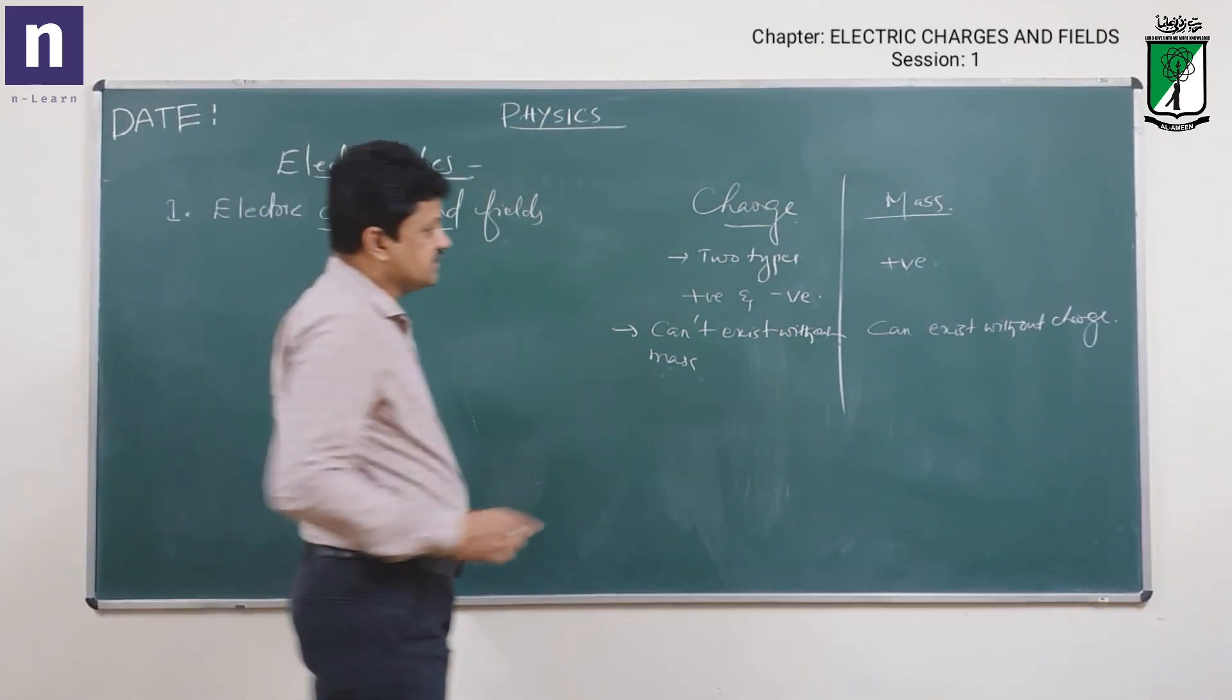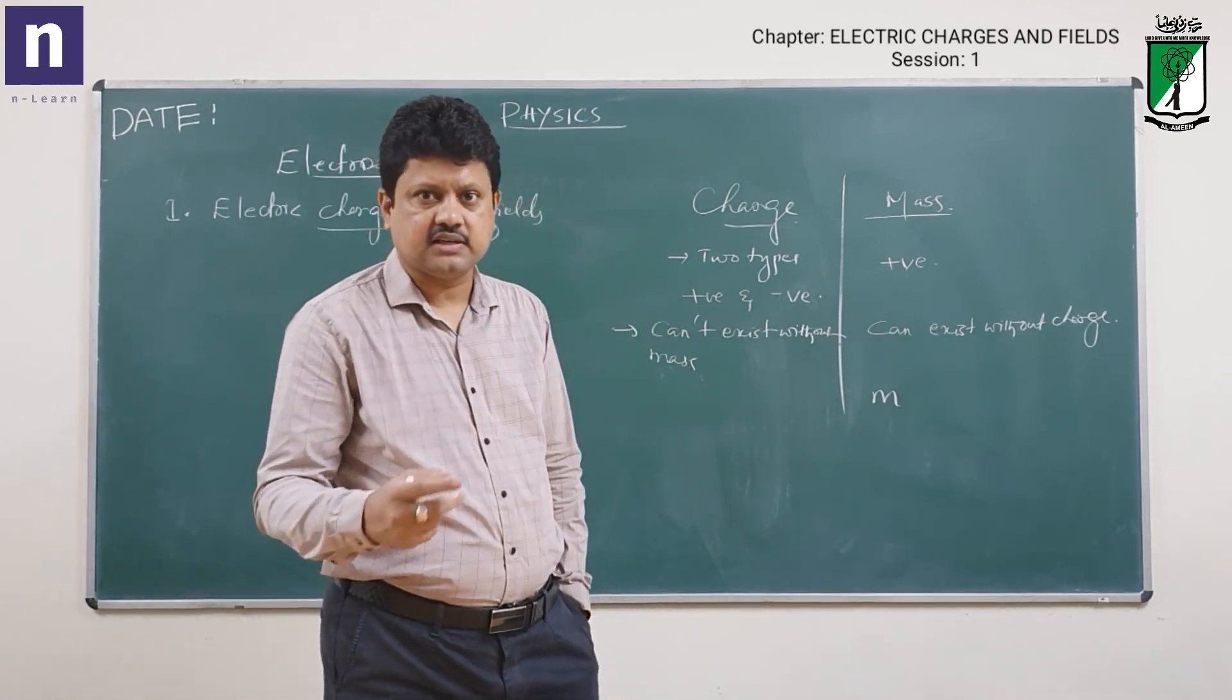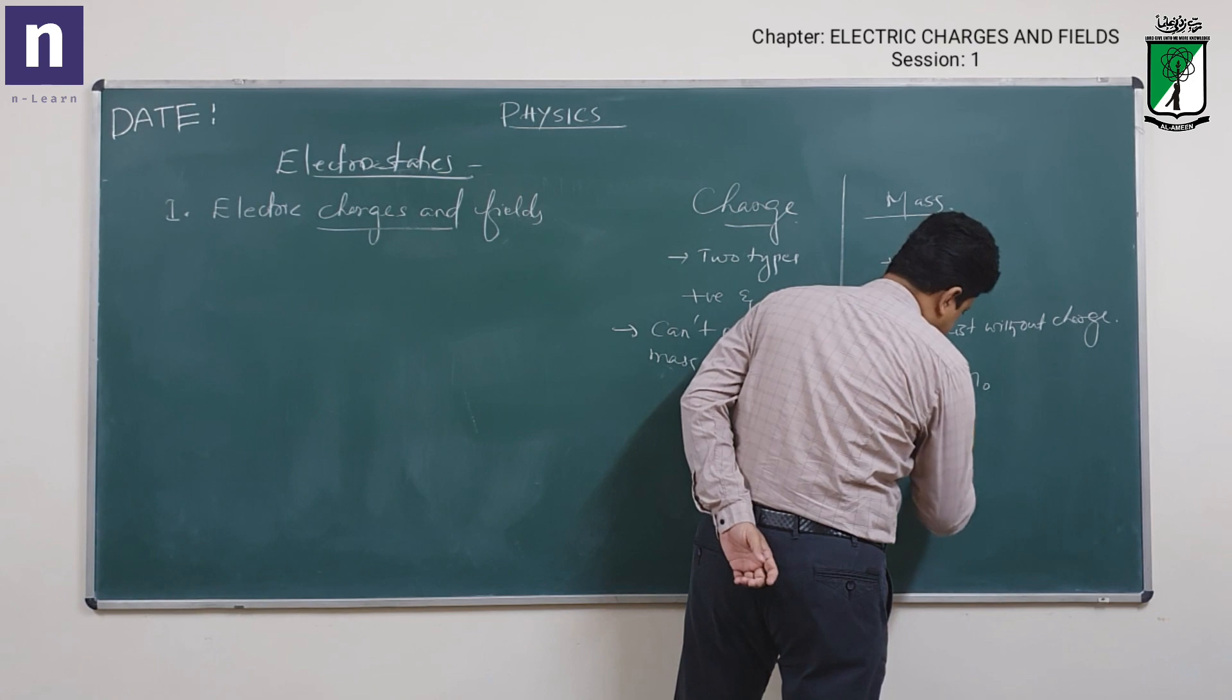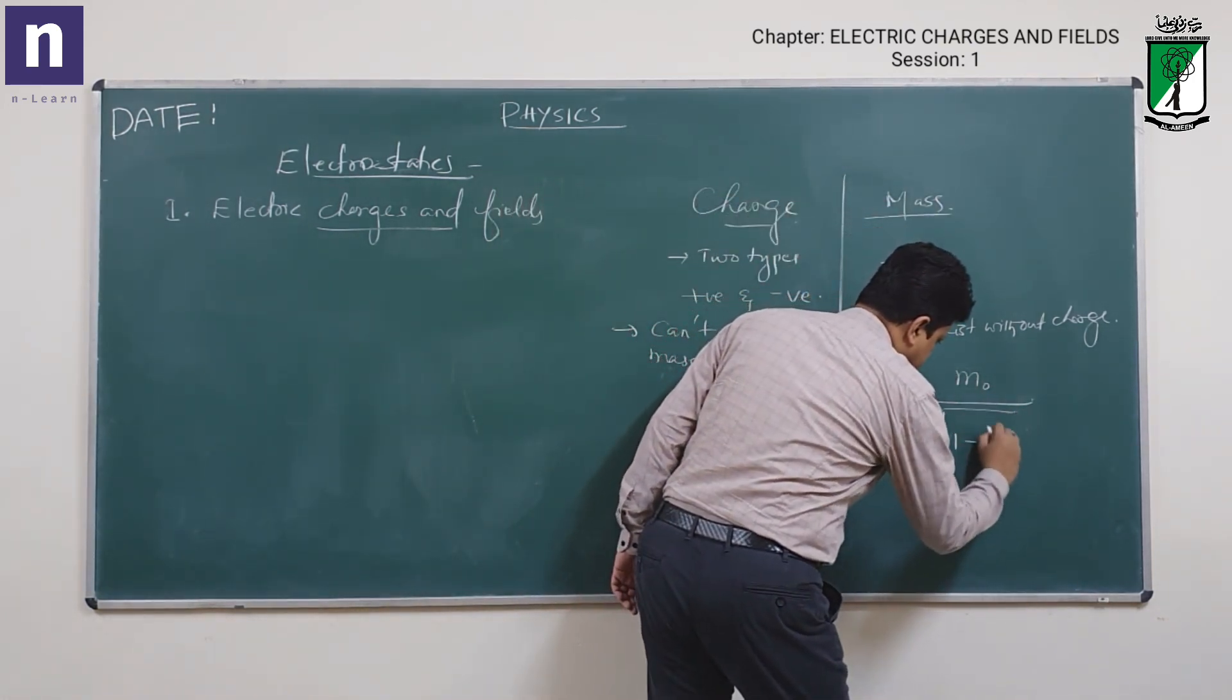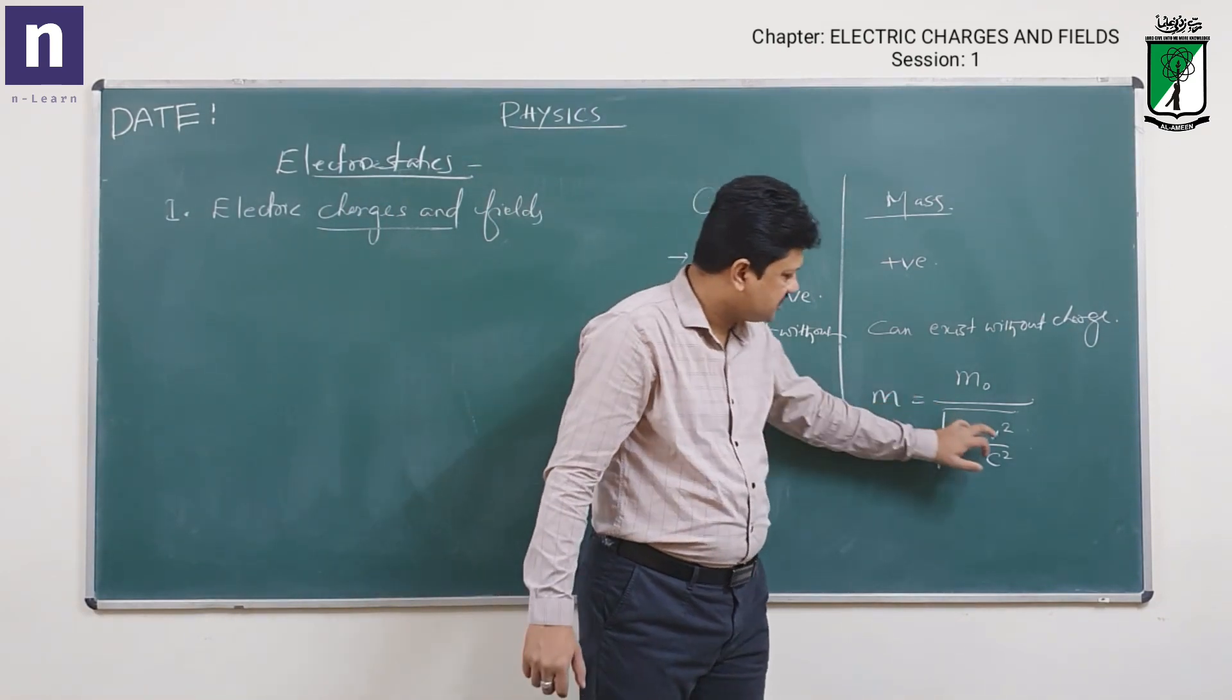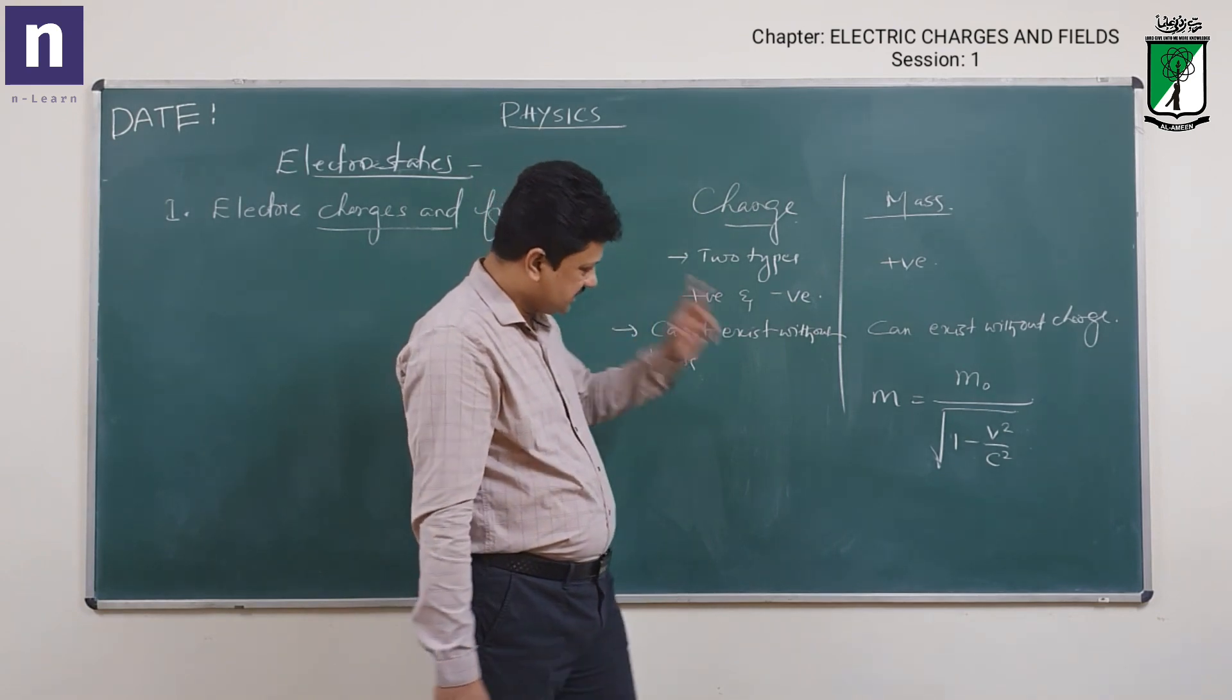Another important characteristic is mass of a body has rest mass and actual mass. Mass of the body is equal to its rest mass divided by root of 1 minus v square by c square. This is the relativistic mass formula. Mass of a body depends on speed.